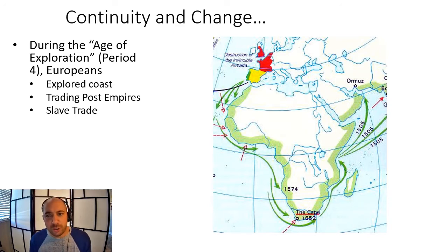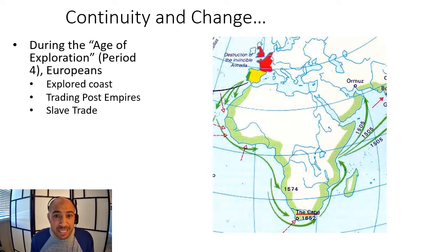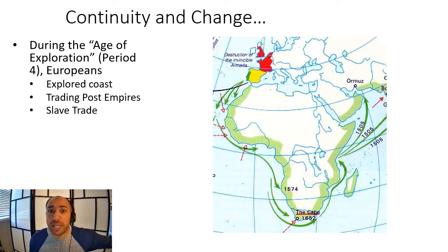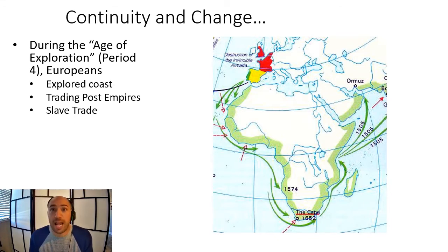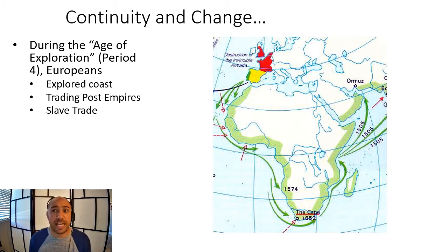The Industrial Revolution led to far greater exploration and colonization. This time, the major players would not be Spain and Portugal, whose empires were in a state of decline, but countries like Britain and France, as well as new countries like Italy and Germany, along with Belgium and the Dutch, who would play major parts in this global scramble for territory, markets, and resources.